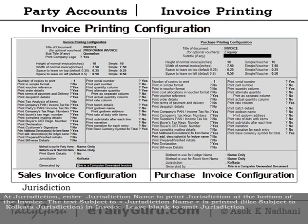Enter the jurisdiction name to print jurisdiction at the bottom of the invoice. The text 'subject to jurisdiction name' is printed — for example, 'subject to Kolkata jurisdiction' — in the invoice. Leave blank to omit jurisdiction.